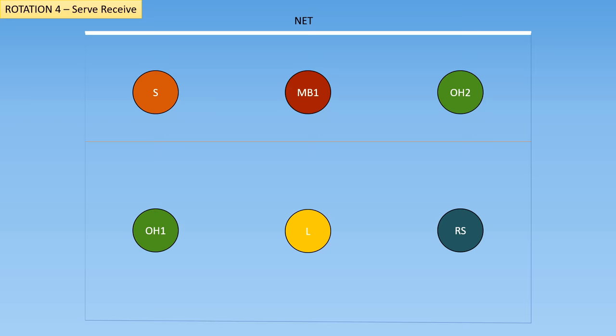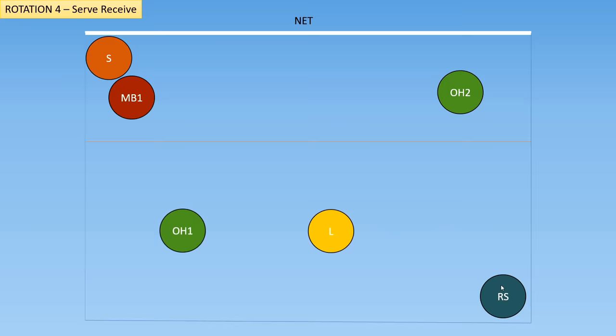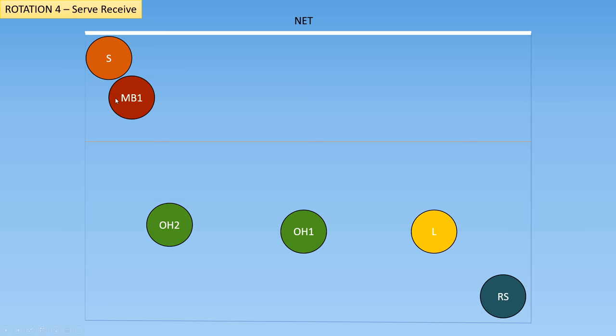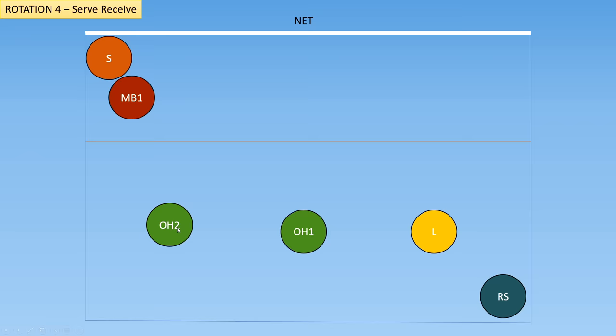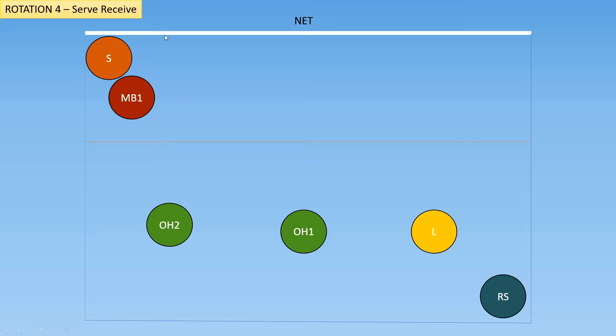For serve-receive in rotation 4, you'll typically see the setter get into the top left corner, the middle blocker come and stack over there with them, and the right-sided hitter drop back without acting as a passer for this rotation. The two remaining players drop back and pass. The outside hitter was next to the middle blocker and the right-sided hitter, so this player can drop all the way over and is still not going to the left of the middle blocker or behind the right-sided hitter — still in rotation even though they've come from the opposite side of the court. The reason this is so effective is that it allows the outside hitter to be hitting from the left side of the court, which is their specialty position.